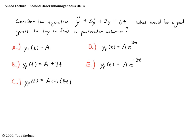Here's extra practice: the equation y'' + 3y' + 2y = 6t has the same left side but now the right-hand side is 6t. Try to determine which of the given choices would be a good guess for a particular solution. Pause the video, decide on the best choice, then try to determine the exact particular solution. If you're not sure, try all the options — seeing which ones work and which don't is a really good learning process. This is a take-home exercise for you.